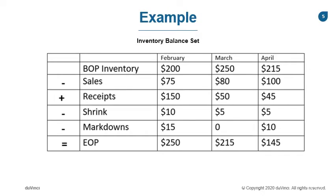As we can see in our example, our Balance Set is using months as our time period. Our starting period is February, where our BOP is $200. Our sales of $75 are deducted from the inventory. We add $150 in receipts, then subtract $10 for shrink and $15 for markdowns. We close February at $250 end of period inventory.